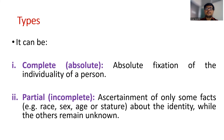Identification is also called absolute identification — that is, absolute fixation of the individuality of a person, meaning complete identification where we can confirm this is a specific person. The second type is partial identification, which is also called incomplete identification.